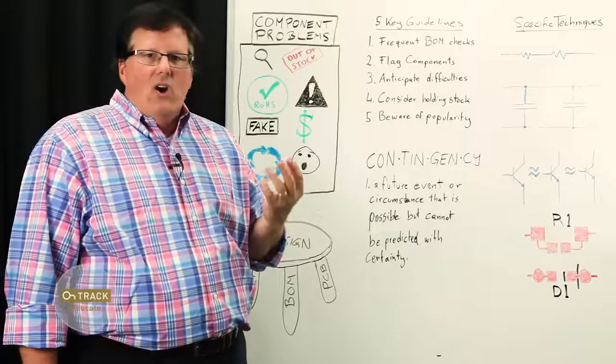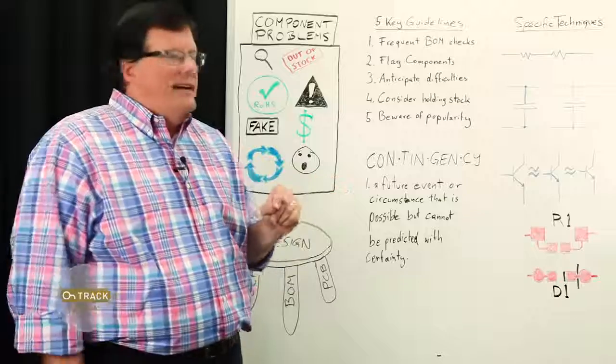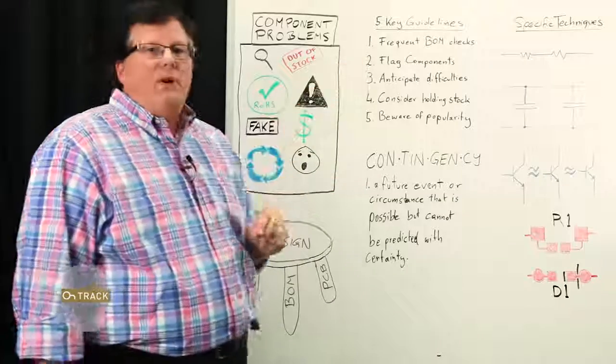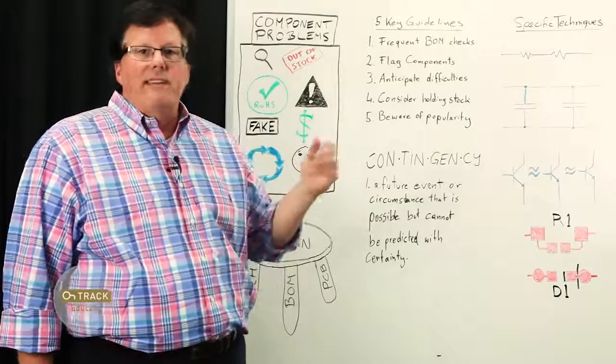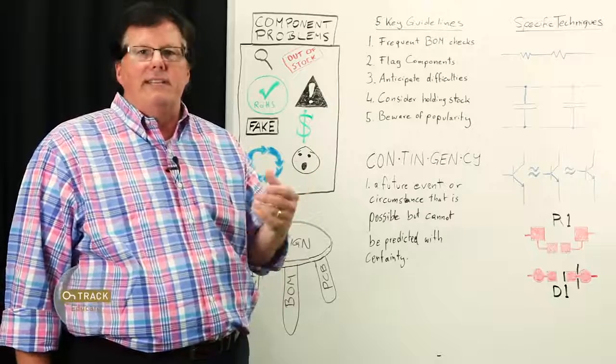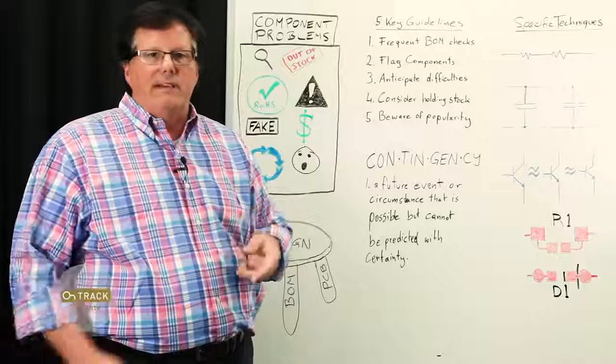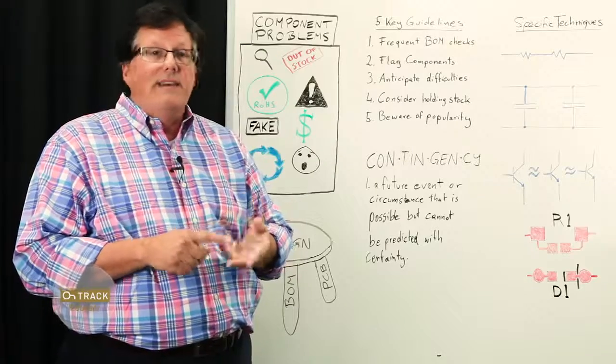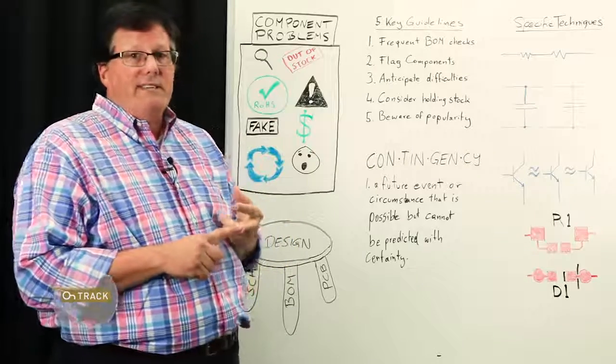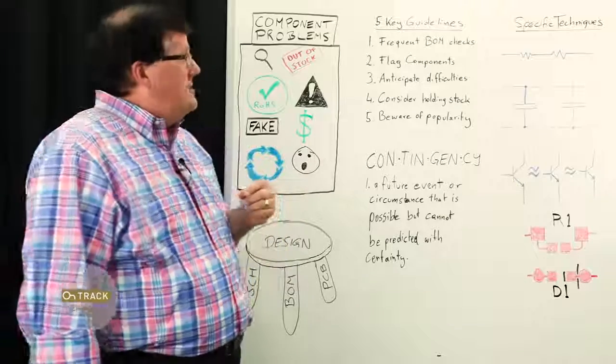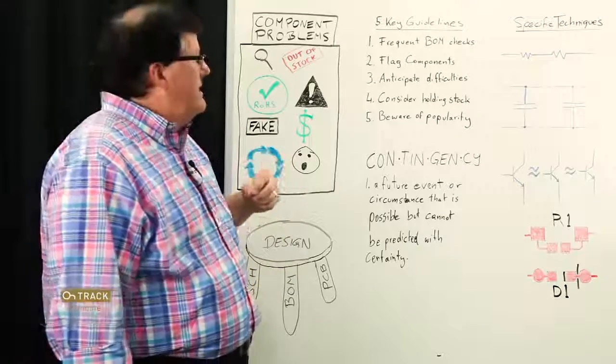Component supplies are fluctuating, just like airline tickets. Flag components that are risky. Better yet, use an automated tool that can get that data for you, so that you're not designing unknowingly with something that's near its end of life, not recommended for new designs, or is only supported by a few suppliers. There's no second-source ability.